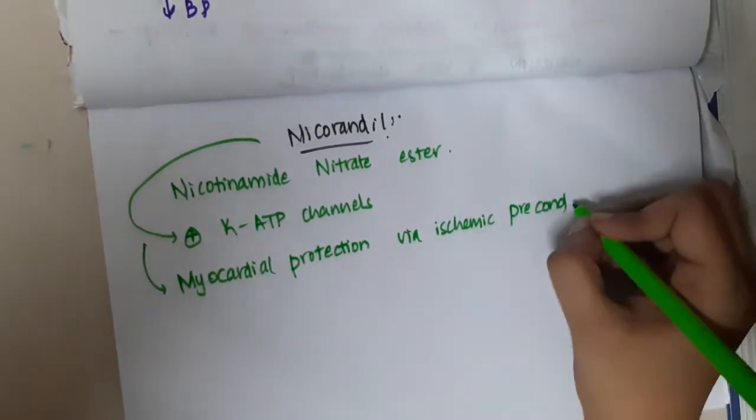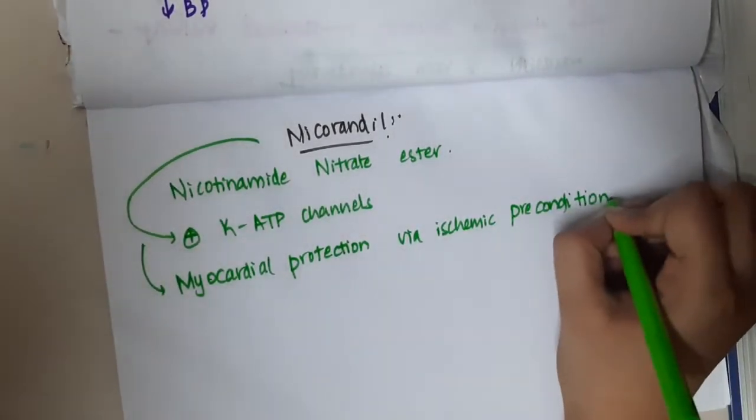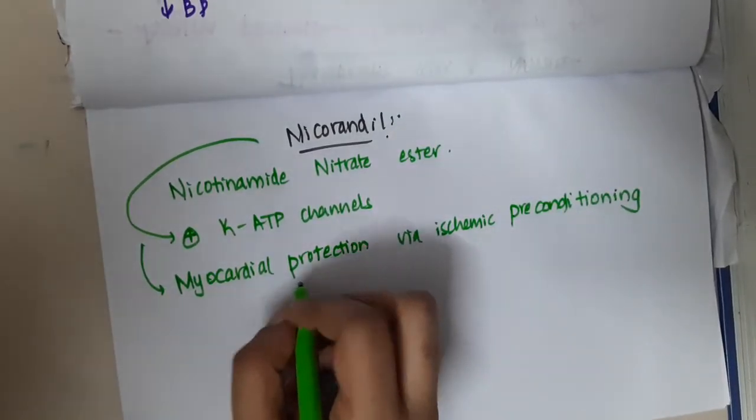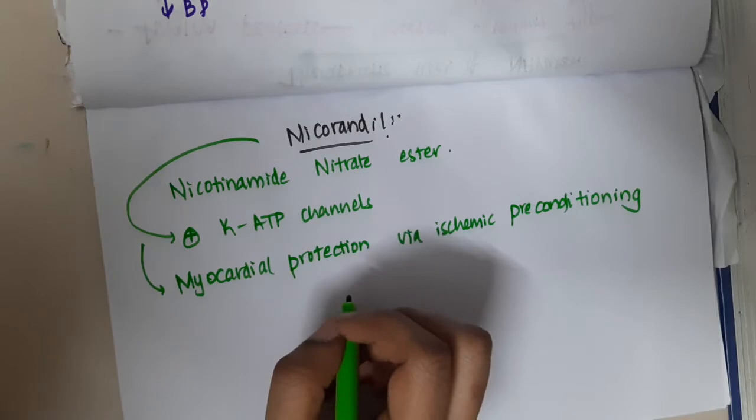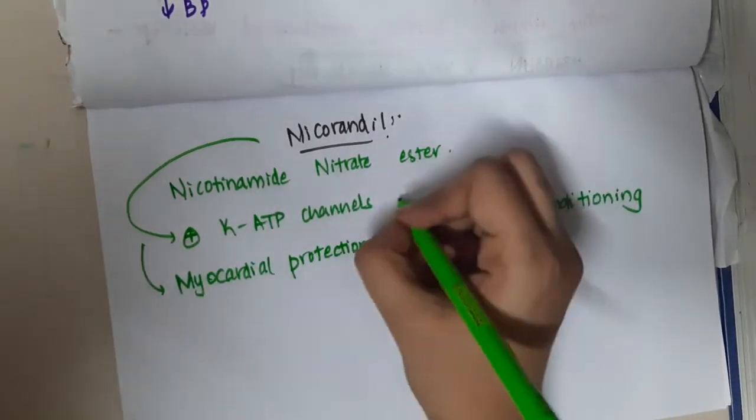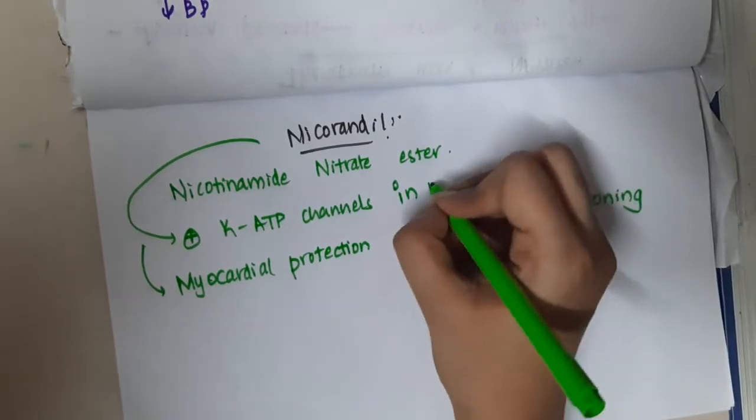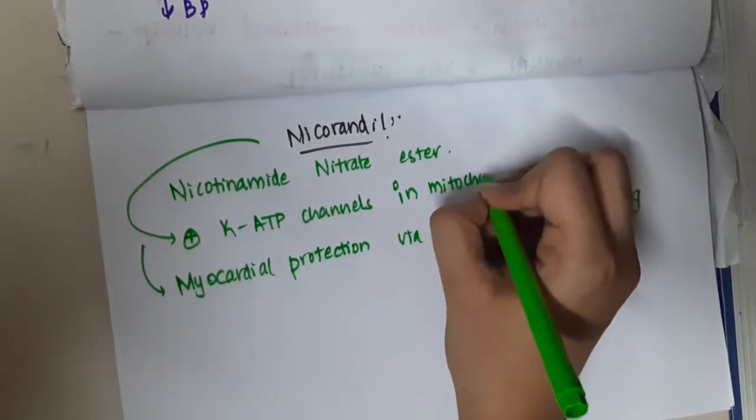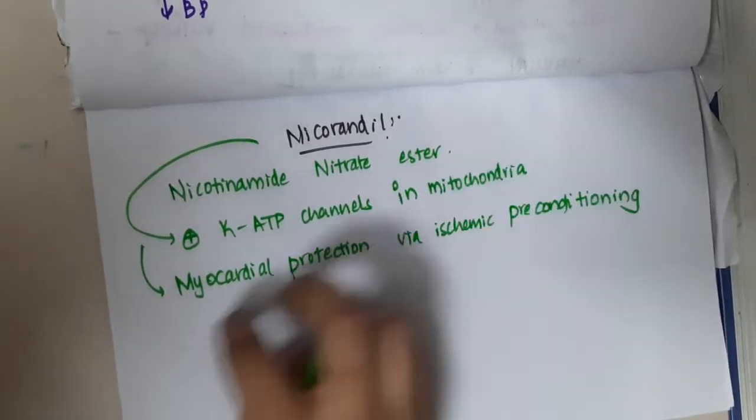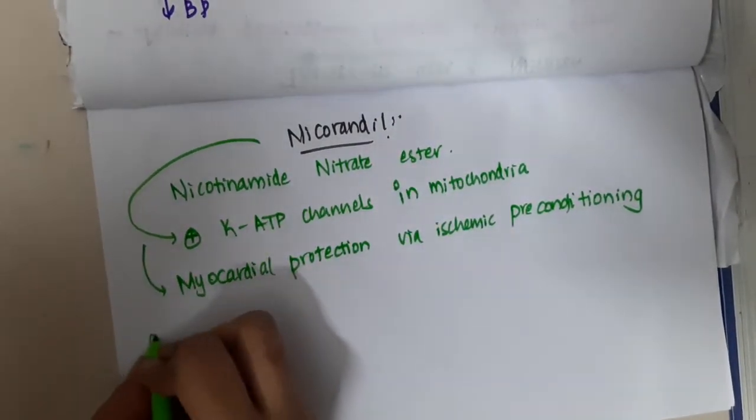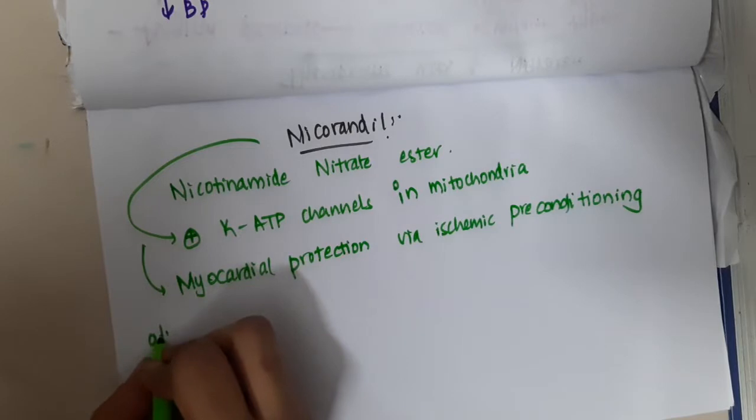These potassium ATP channels are present in mitochondria. Thus, it causes myocardial protection. Nicorandil is also associated with side effects.